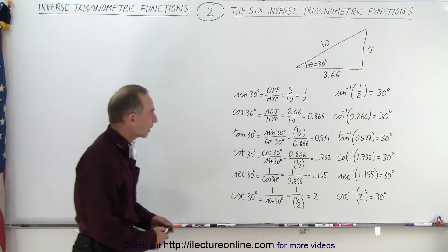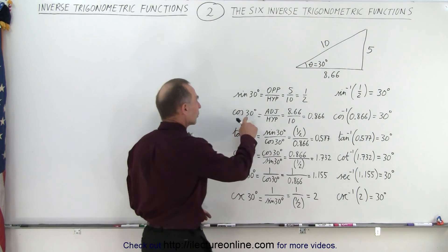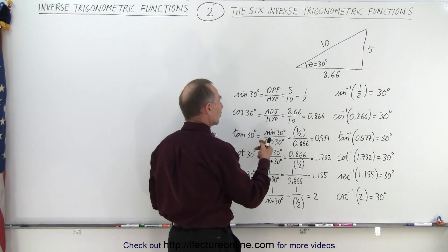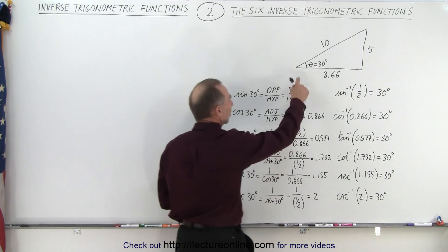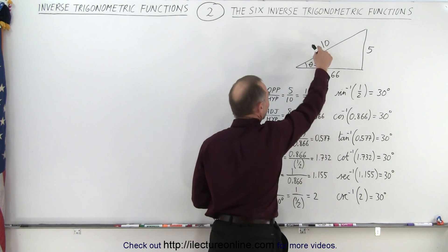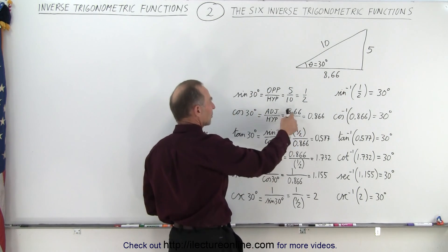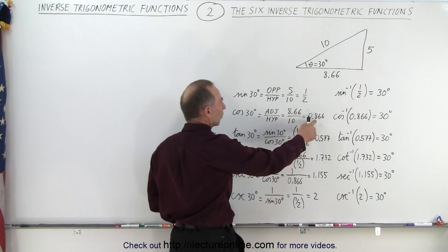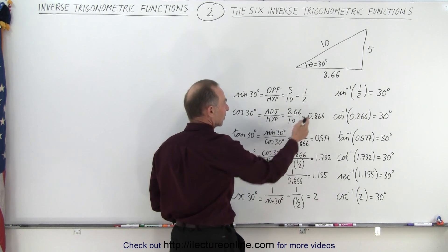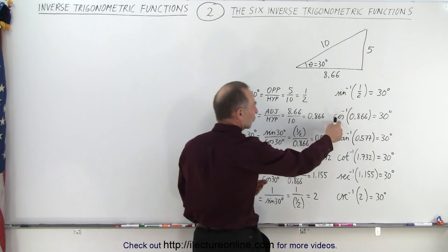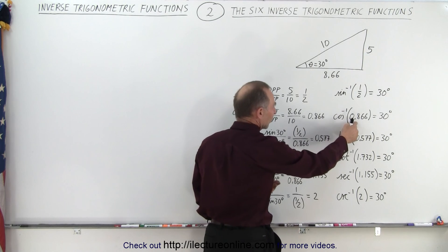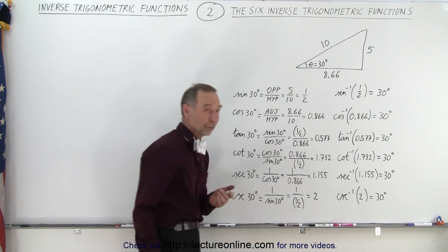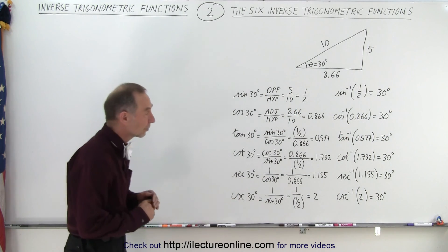With the cosine of 30 degrees, the cosine of an angle by definition is the ratio of the adjacent side divided by the hypotenuse. In this case that's 8.66 divided by 10, or 0.866. So if we take the inverse cosine of 0.866, we get back the angle of 30 degrees.